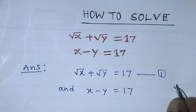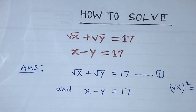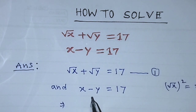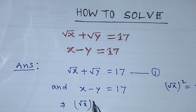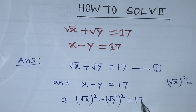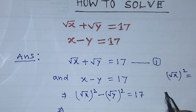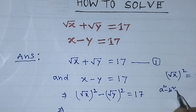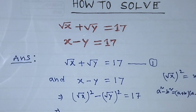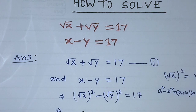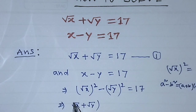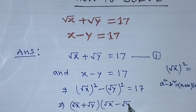We know that root over of x whole square is equal to x. So we can apply this rule on the second equation. From the left hand side, we write root over of x whole square minus root over of y whole square is equal to 17. Now we apply the formula a square minus b square equals a plus b into a minus b, giving us: root over of x plus root over of y, into root over of x minus root over of y, is equal to 17.